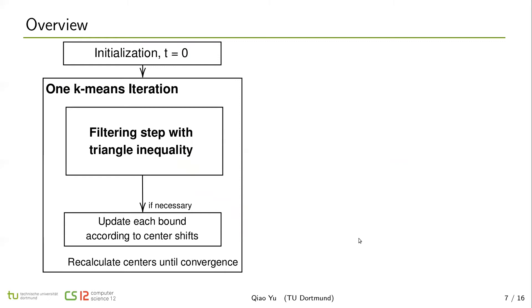Here is the overview of Elkan's k-means. After initialization, Elkan's k-means firstly gets into filtering steps with triangle inequalities. If points are filtered by filtering step, the bounds will be updated according to center shift. Otherwise, points will really be calculated to centers. After all points find the closest centers, we recalculate centers until convergence.